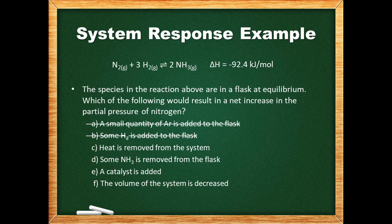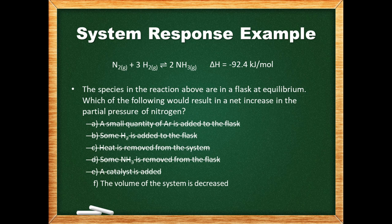Removing heat from the system — since the forward reaction is exothermic — will cause a right shift, decreasing the concentration and partial pressure of nitrogen. Similarly, removing some ammonia will cause a right shift to restore some of the lost ammonia, also decreasing the partial pressure of nitrogen. Adding a catalyst will increase the forward and reverse rates equally, so the equilibrium will not be affected and the partial pressure of nitrogen will remain the same.